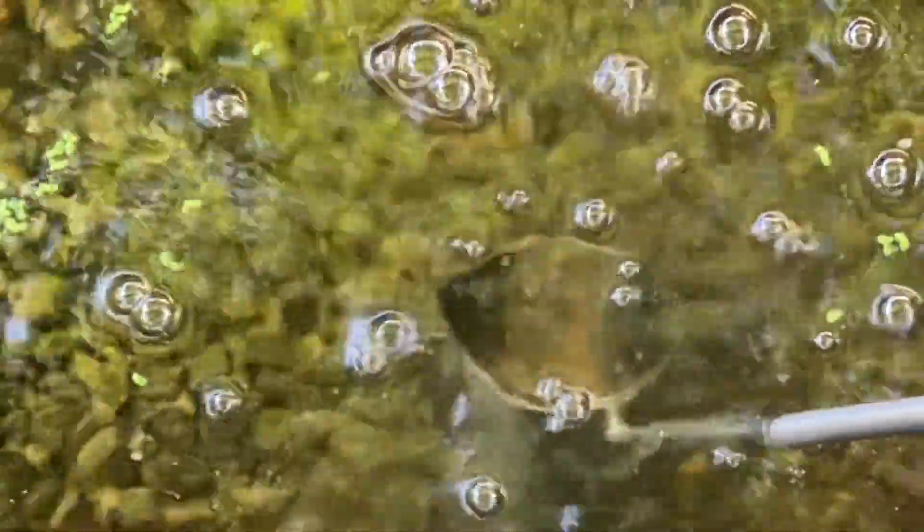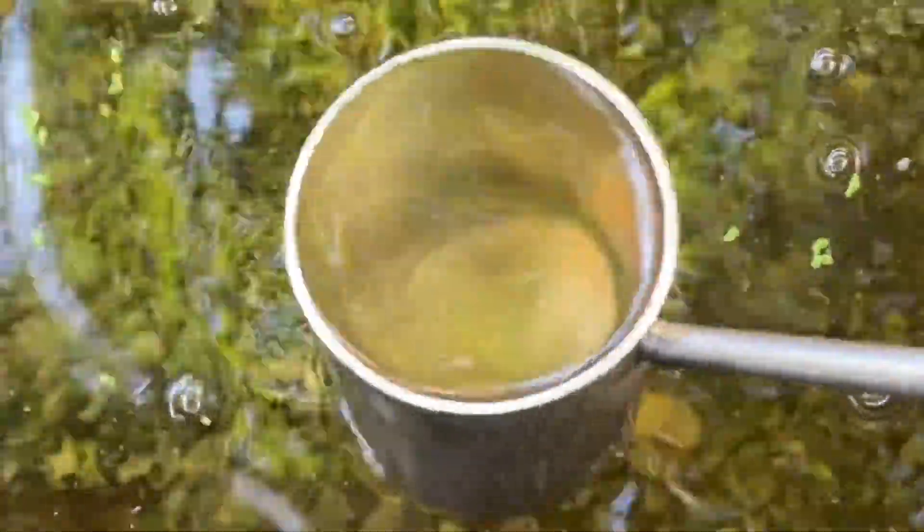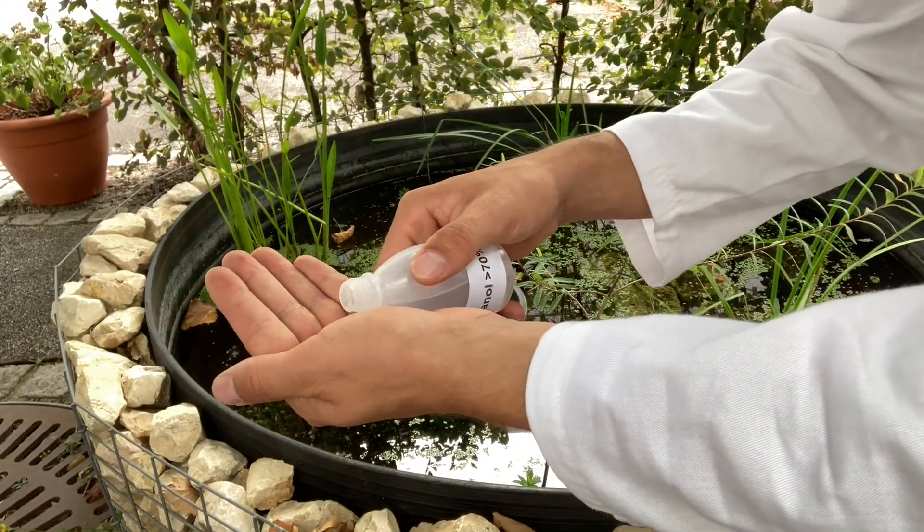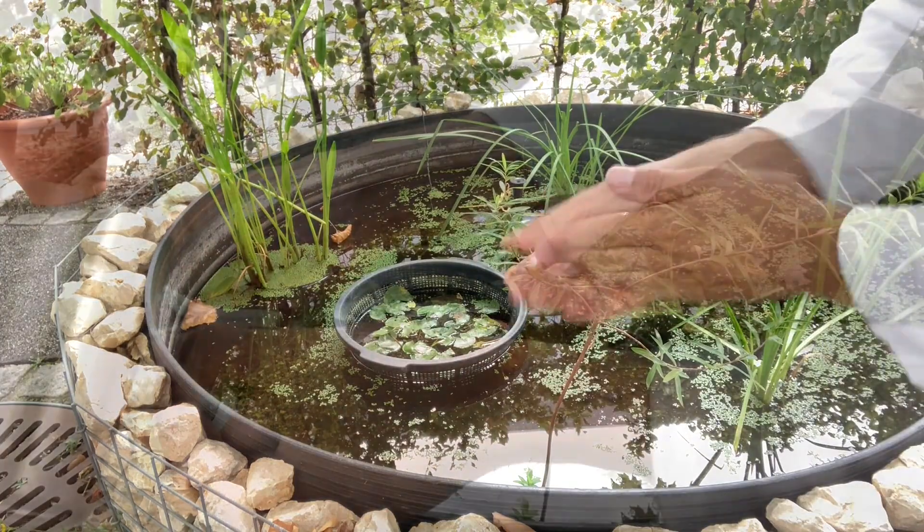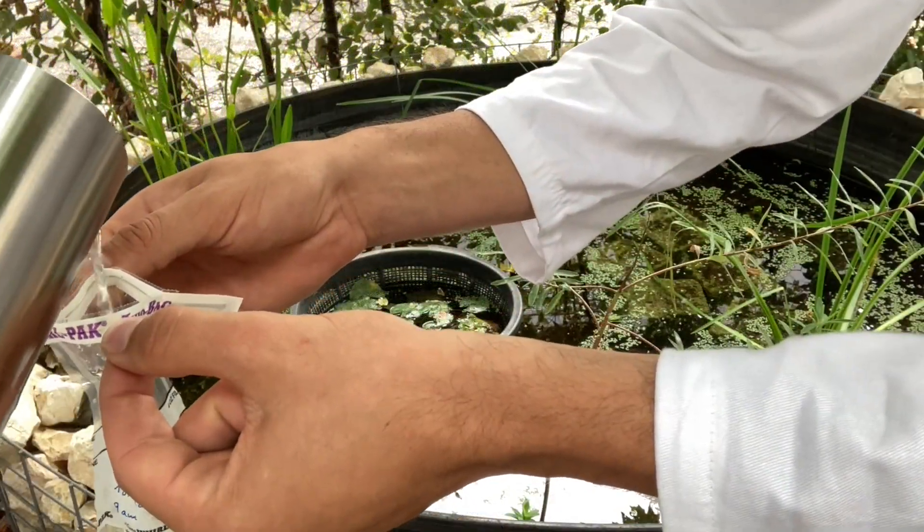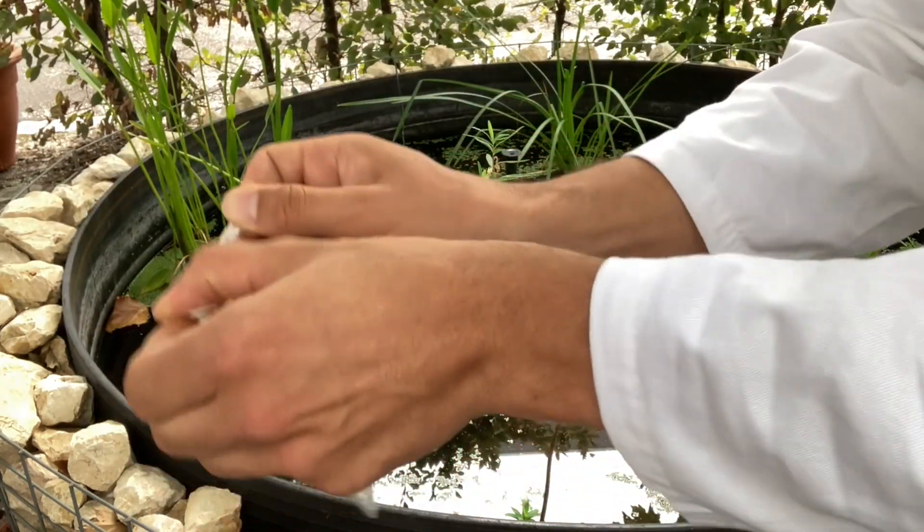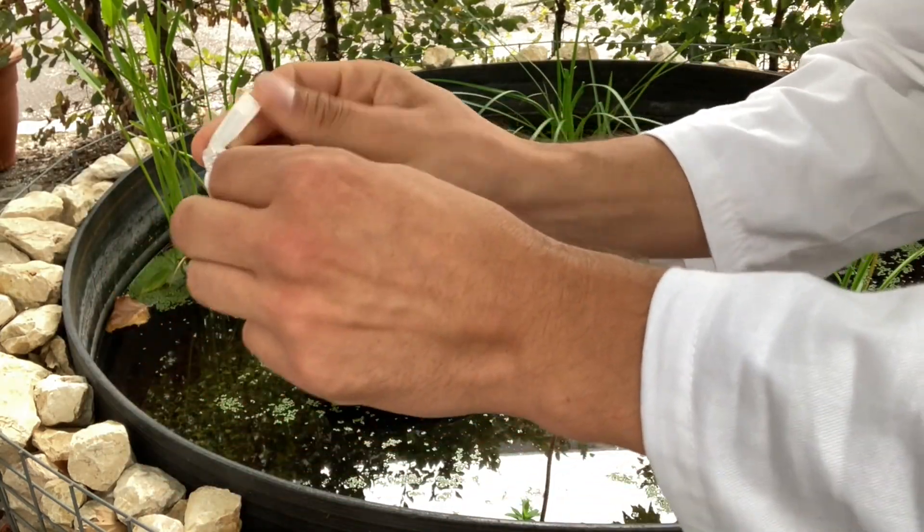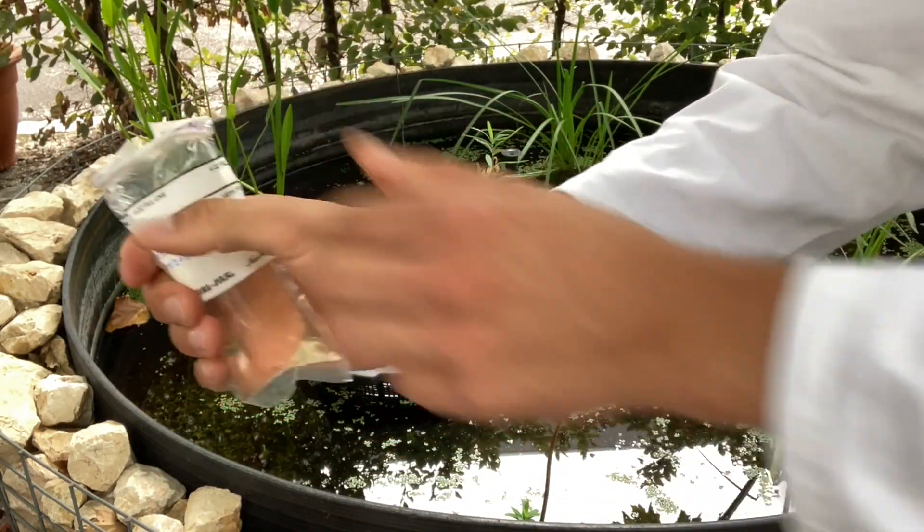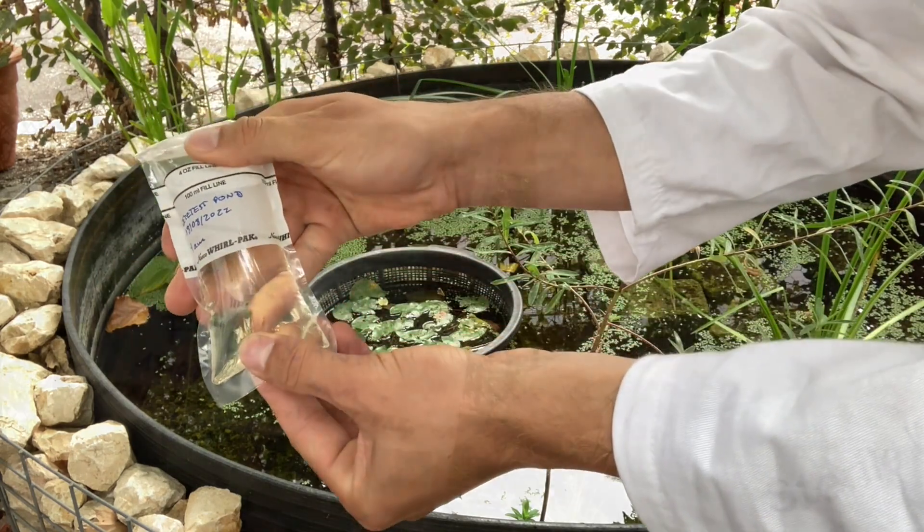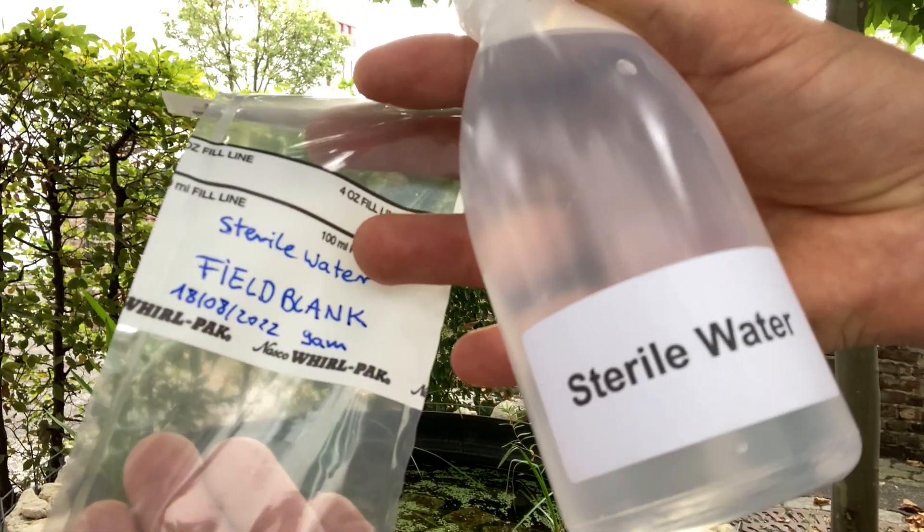Take the sample. Submerge the end piece completely below the water surface. A second person now disinfects his or her hands and opens the sample bag. Fill it slightly over 100 milliliters, then pull the wire ends, whirl the bag completely three times, and turn the tape wire inward on the opposite side of the fold.